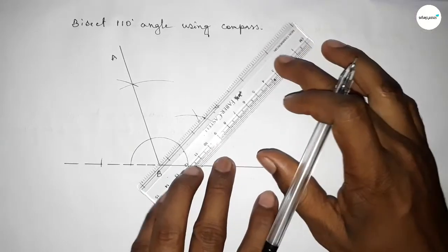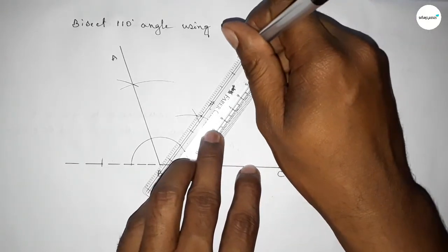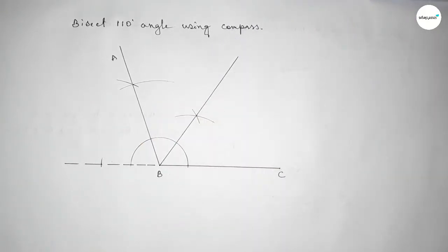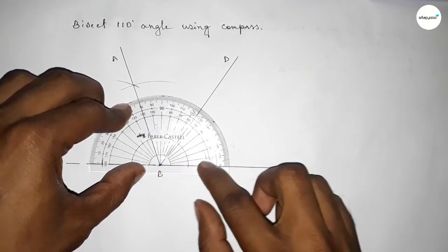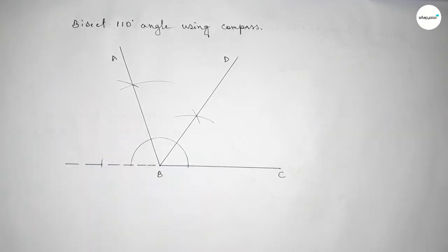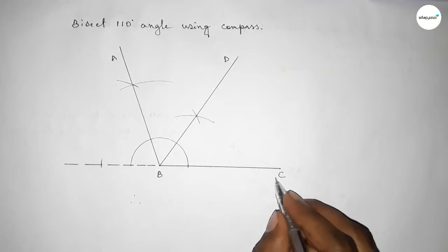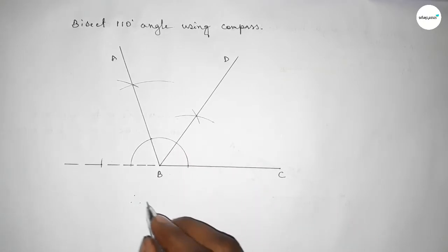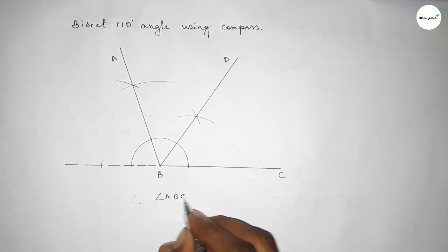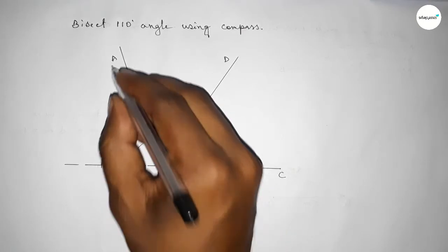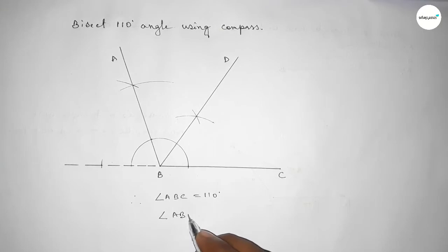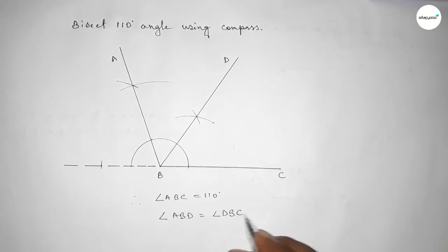Now joining this line to bisect the 110-degree angle. Taking point D. Checking the angle — this is perfectly 55 degrees. Therefore, angle ABC equals 110 degrees, and angle ABD equals angle DBC.